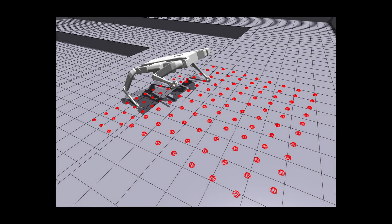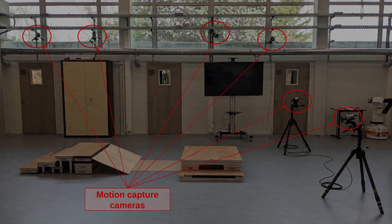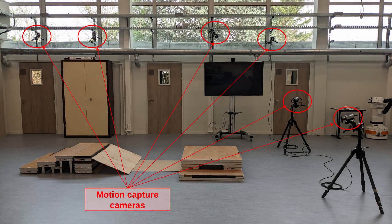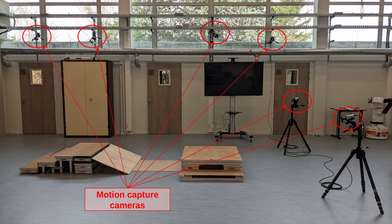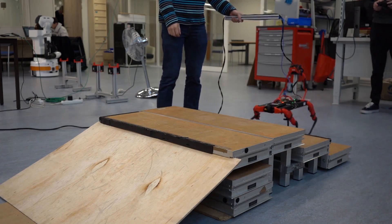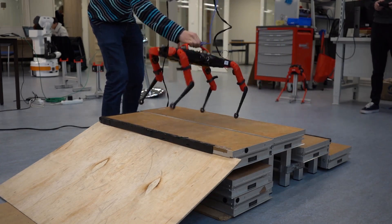In simulation, the robot observes a heightmap scan of its surroundings. On the real robot, we use external motion capture cameras to reconstruct the heightmap of its surroundings based on its position and orientation in the world. We validate our approach on walking upstairs from the front.